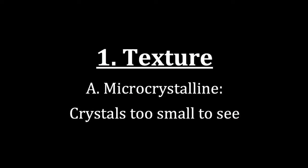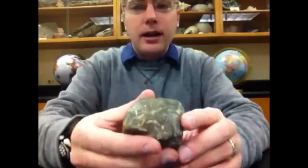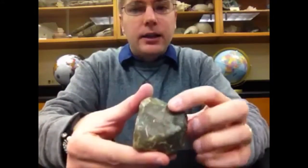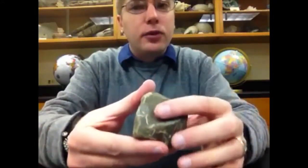When identifying chemical sedimentary rocks, the first property we have to look at is texture. There are two different textures. The first one is microcrystalline. When we're holding a microcrystalline rock, we will see that the crystals making it up are too small to be identified. The light just kind of goes across it and it feels really smooth.